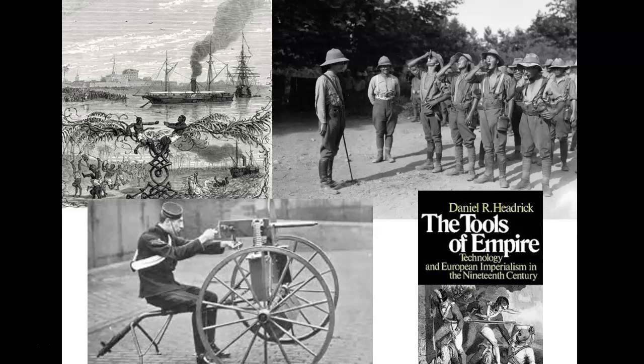Some of these tools included the machine gun, which in its inception was known as the Maxim gun, steamships, which allowed European and other colonial powers to travel up long waterways such as the Nile River or the Congo, and also medicines such as quinine, which mitigated the effects of malaria. These tools allowed Europeans to achieve an unprecedented level of control over places such as Africa, which because of its great expanses and forbidding diseases had remained inaccessible to Europeans except on the coast throughout the early modern period.